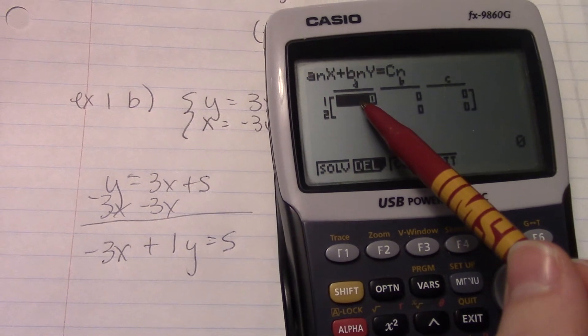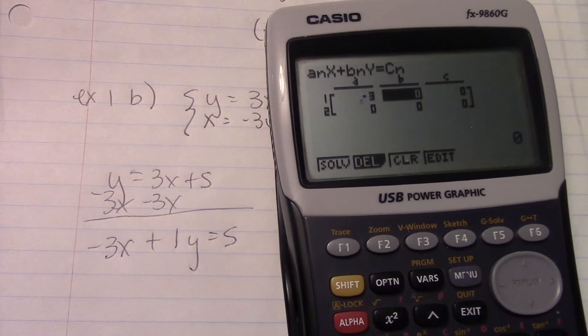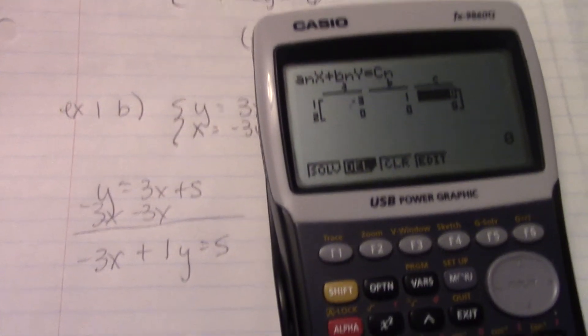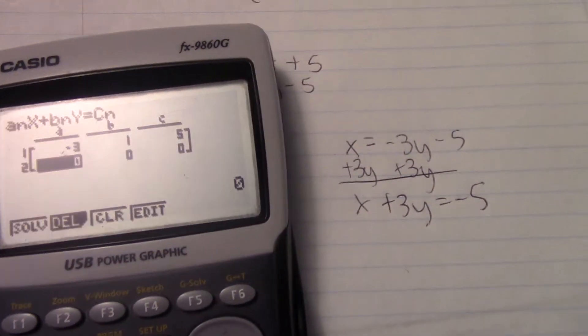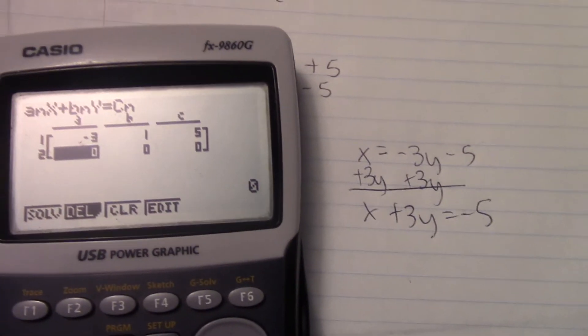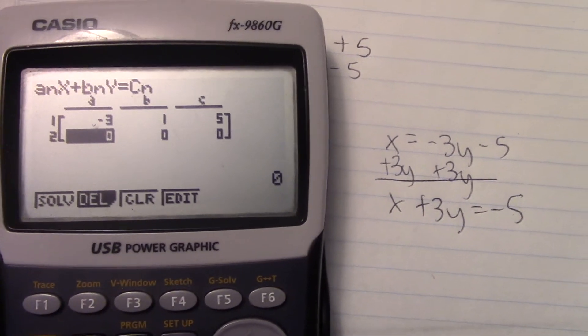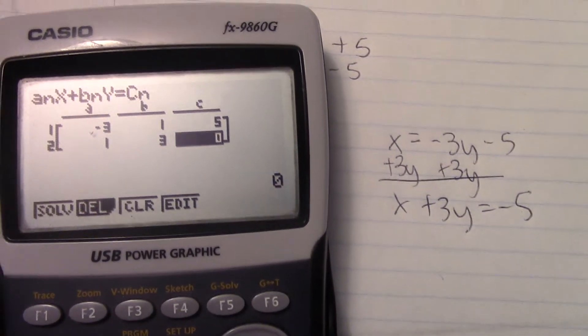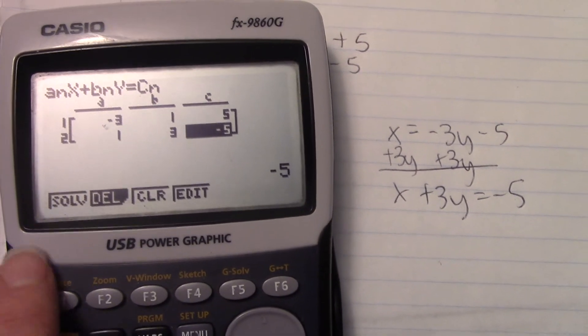Okay, so we've got negative 3X. So, negative 3, blue button execute. 1, blue button execute. 5, blue button. So, our other one is, sorry. 1, 3, and negative 5. Hit F1 to solve it.